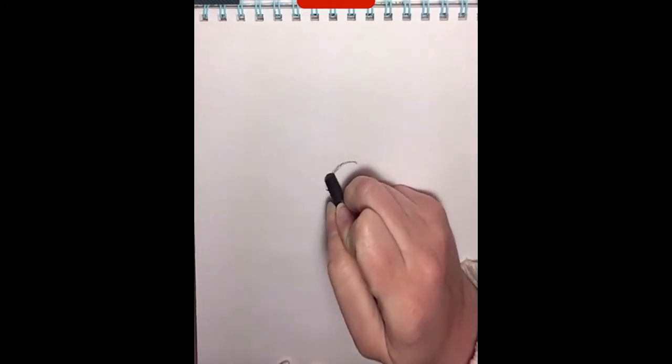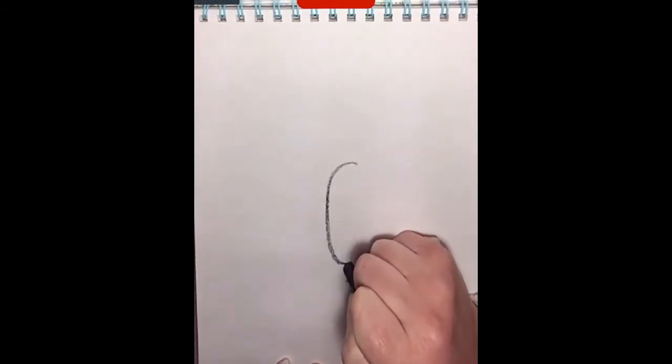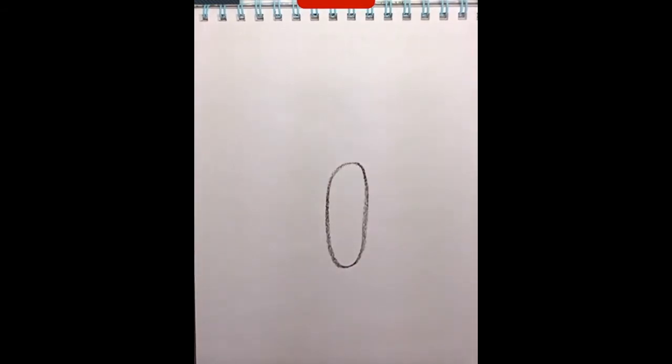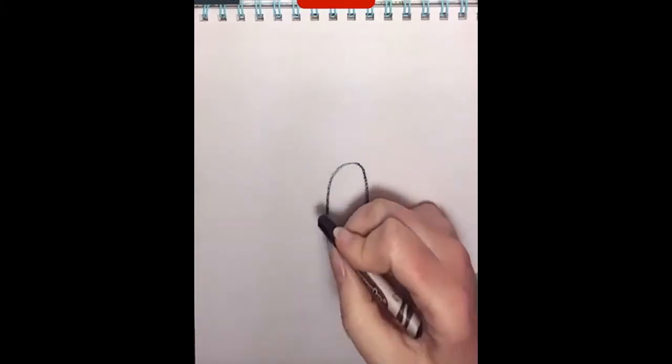What you're going to do is draw in the center of your paper a nice long oval, just like that. And if you have something that's shaped like an oval, you can go ahead and trace it if you want to.